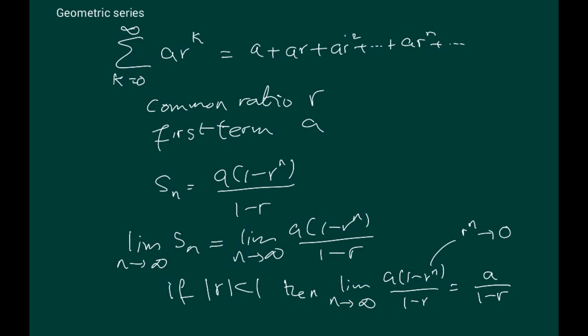That's also a well-known result for a geometric series: the infinite sum of the geometric series, provided the common ratio is less than 1, is in fact a over (1 minus r). So the series converges to a over (1 minus r) as long as this condition is there—which is the common ratio is less than 1.